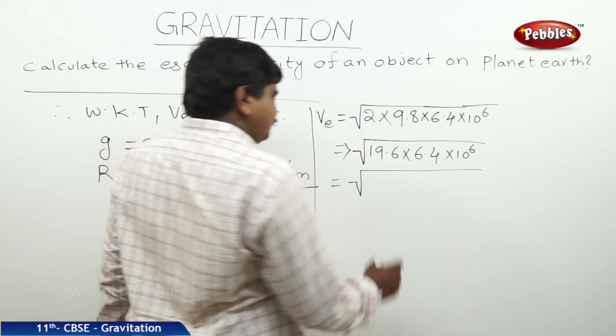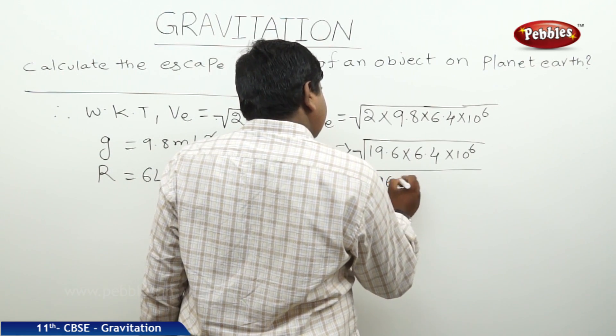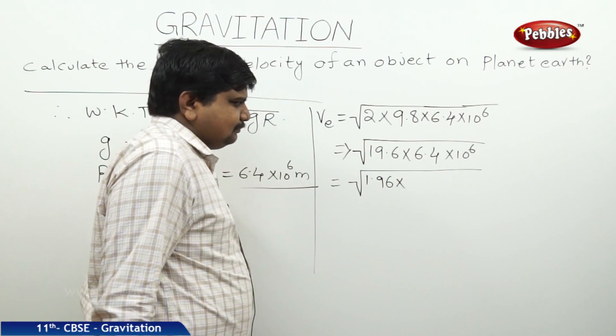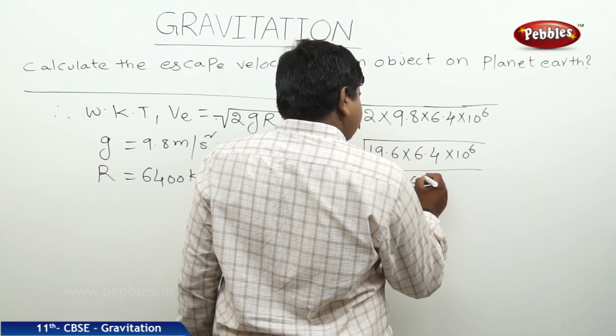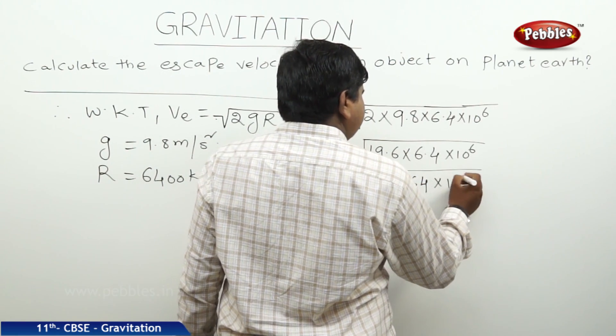We can write this one as 1.96 into 64 into 10 to the power of 6.